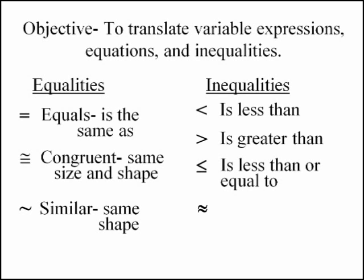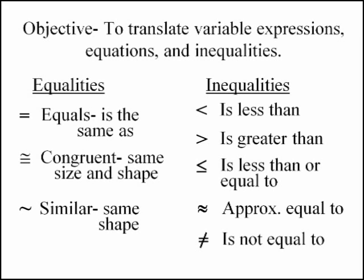Here's a symbol we use a lot when we're talking about pi. Because we never know the exact value of pi, we say pi is approximately equal to 3.14. And then here's another one, not equal to, is not equal to. So that's a pretty good list of equalities and inequalities.